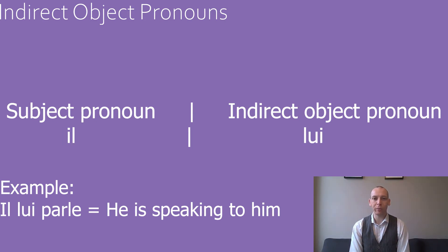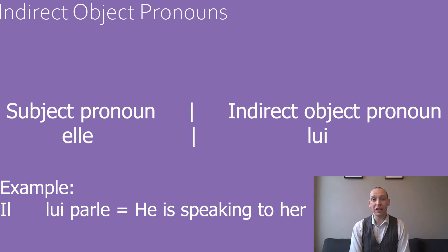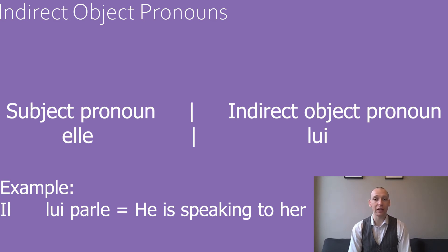The indirect object pronoun for il is lui. For example, il lui parle — he is speaking to him. The indirect object pronoun for elle is also lui. So the same example, il lui parle, can also mean he is speaking to her.